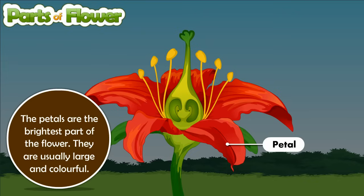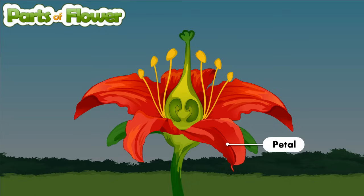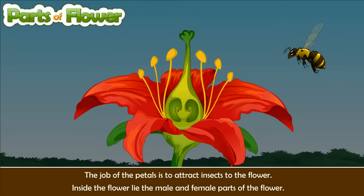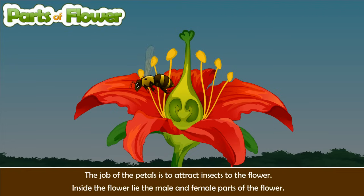The petals are the brightest part of the flower. They are usually large and colorful. The job of the petals is to attract insects to the flower. Inside the flower lie the male and female parts of the flower.